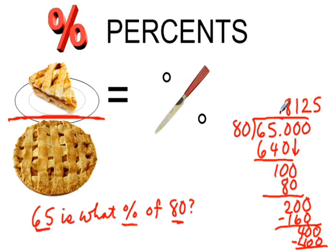And so, the final answer, 0.8125, that's not exactly the final answer, because we need to convert this decimal into a percent. And to convert the decimal into the percent, we move the decimal point over two places, and the answer is 81.25%. Let's take another example, maybe a little simpler.